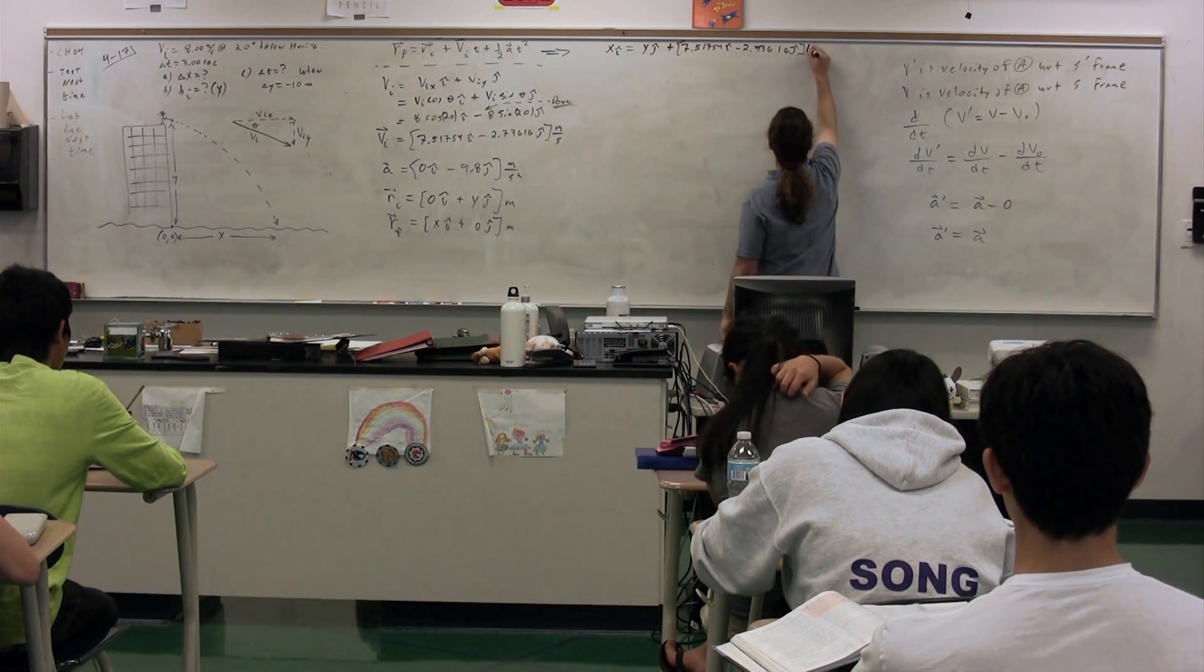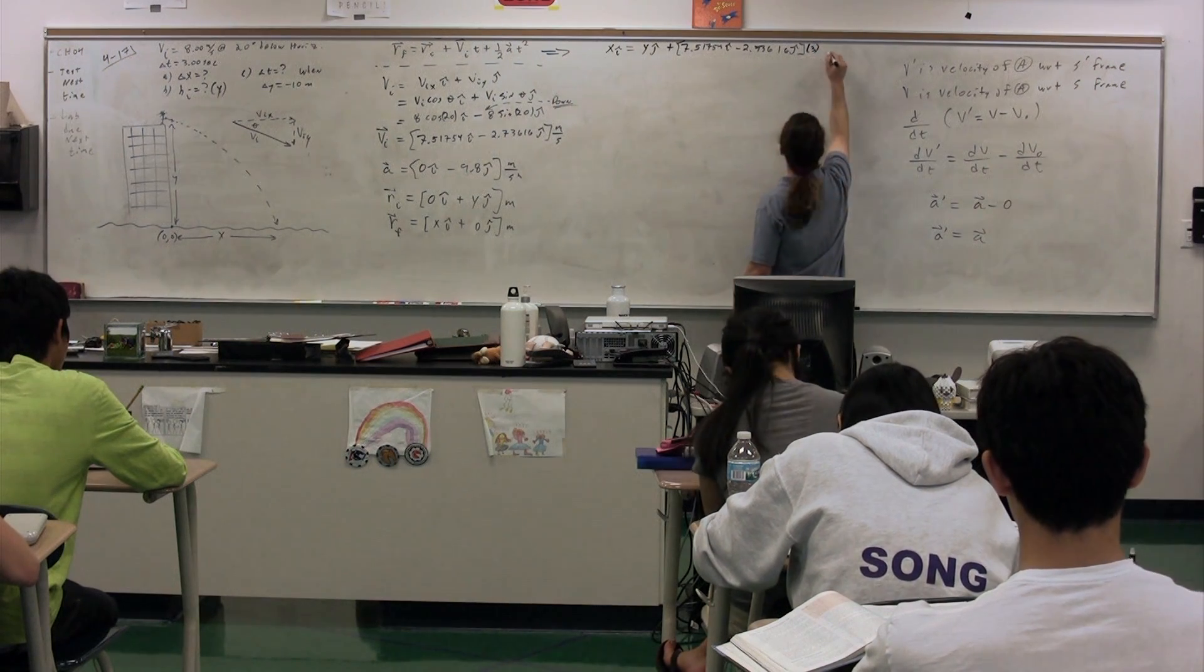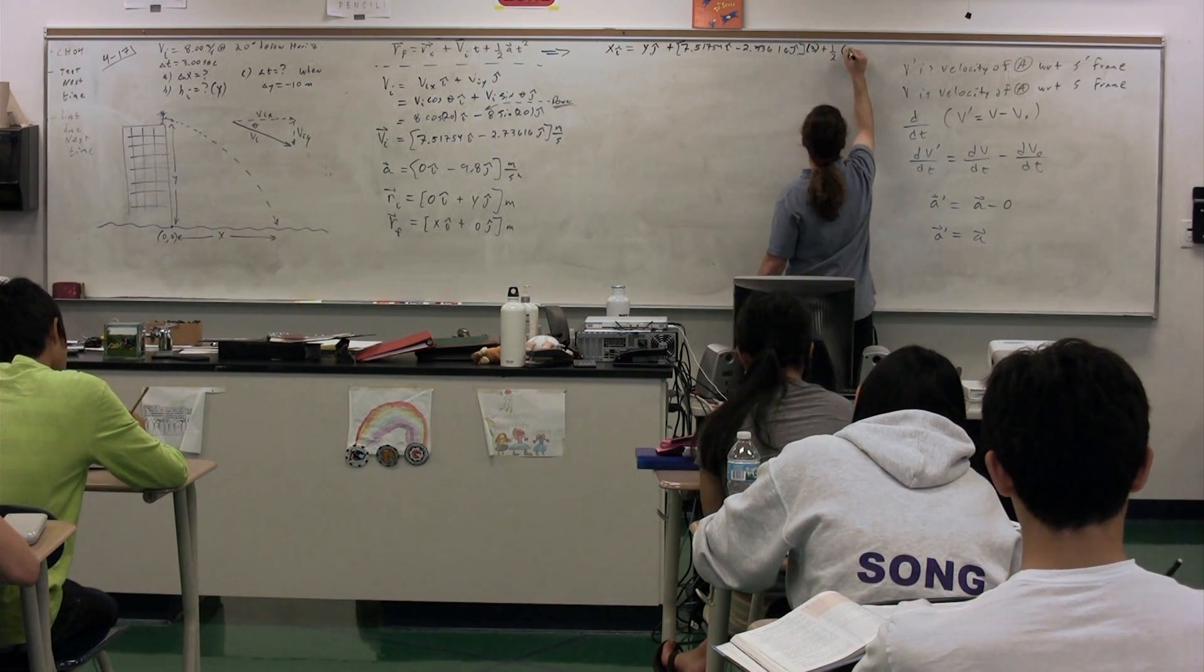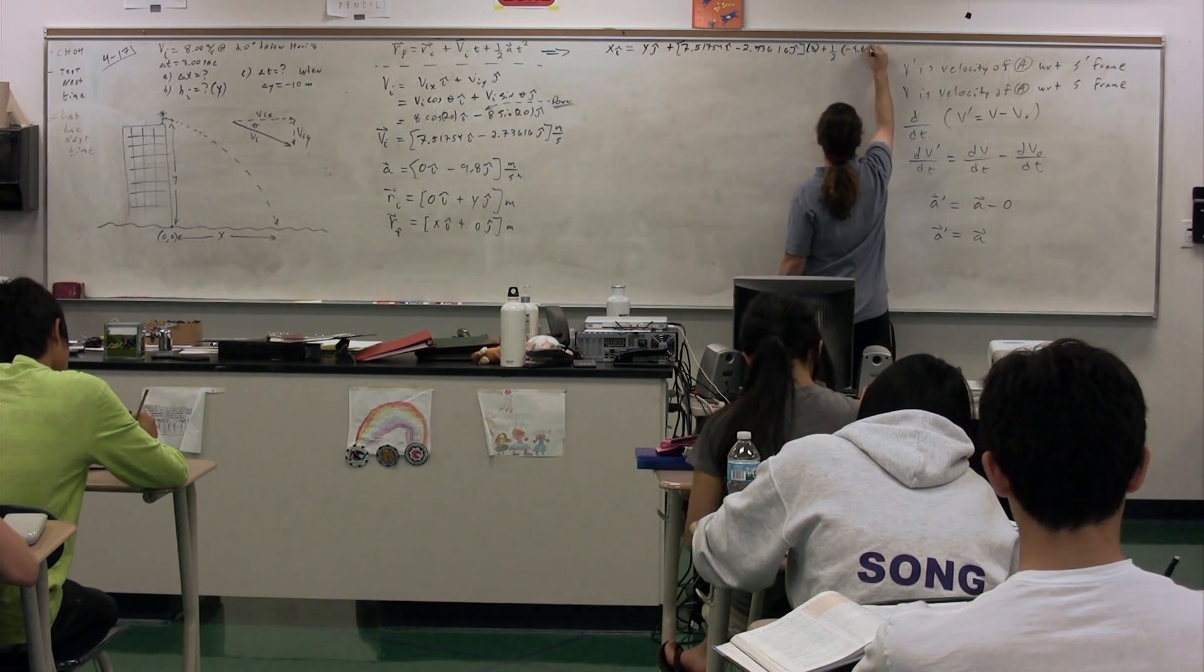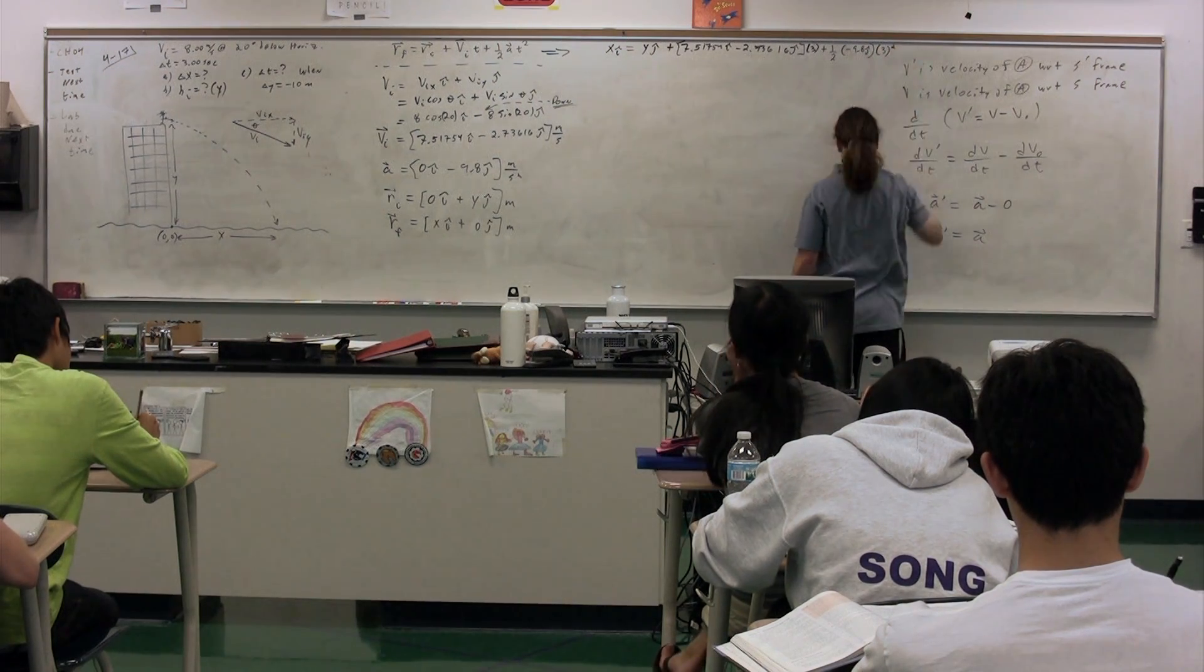Our time, which is three seconds, plus one-half times our acceleration, which is negative 9.8 j multiplied by our time squared, which is three squared.